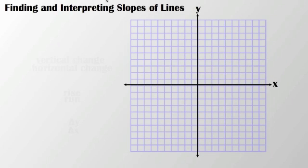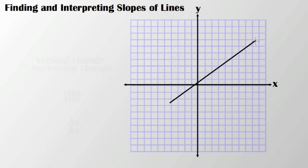Today we're going to be talking about finding and interpreting the slopes of lines. A line helps to represent a linear relationship. What I'm going to do on this coordinate graph is go ahead and make a line — something like that.